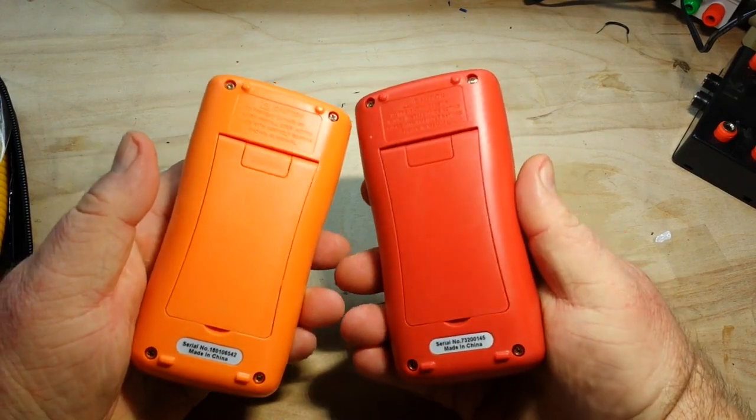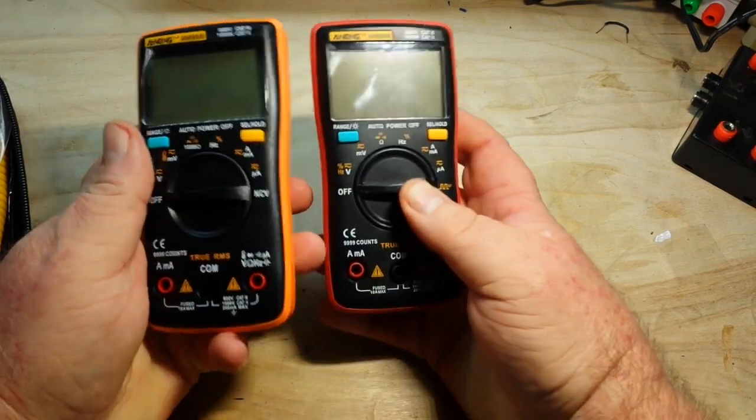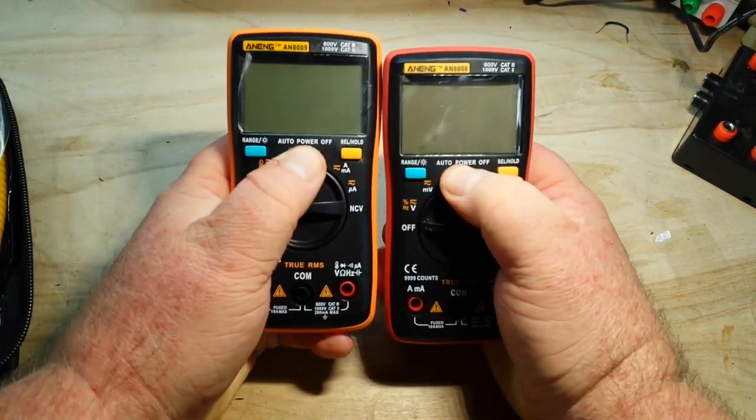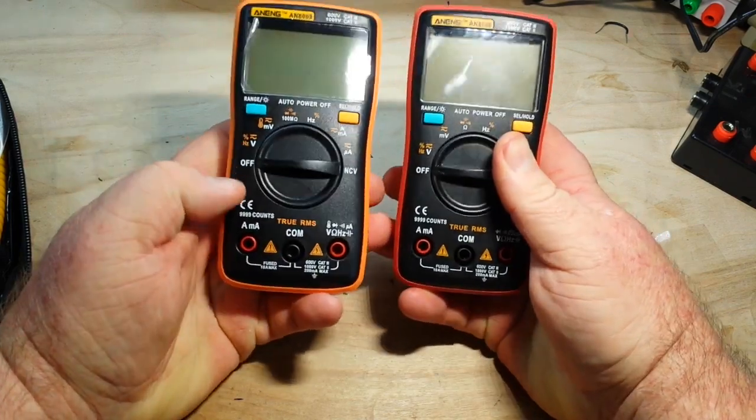Now you can see size-wise they are basically the same. We've gone from a red shell to an orange shell. Auto power off, same on both of them. Range and light, same on both of them. Select and hold is the same.